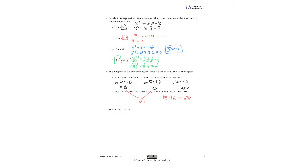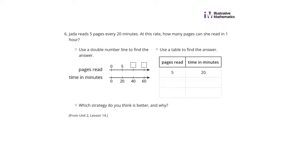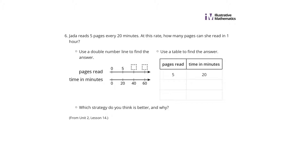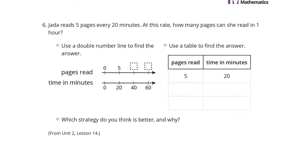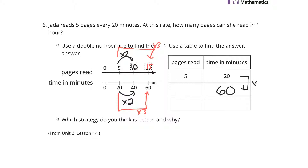Next page, we'll continue on. Jada reads 5 pages every 20 minutes. At this rate, how many pages can she read in one hour? Double number line or table — which strategy do you like better? To get from 20 to 40, we multiply by 2, so 5 times 2 is 10 pages. From 20 to 60, we multiply by 3, so 5 times 3 is 15 pages. Using the table: at 60 minutes, that's times 3, so 5 times 3 is 15 pages. Which strategy you use is up to you.